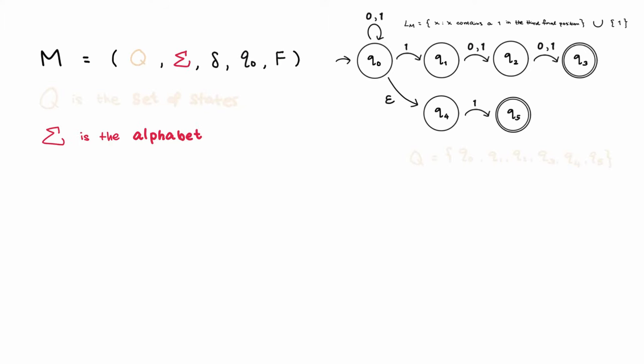Sigma is a finite set called the alphabet, which is all the symbols recognized by the automaton. So in this case it is the set containing 1 and 0.